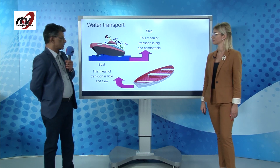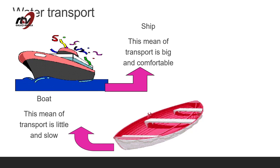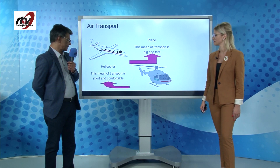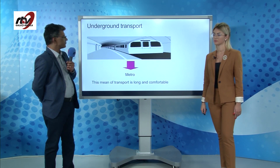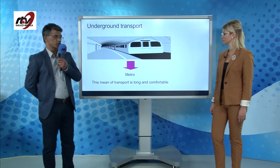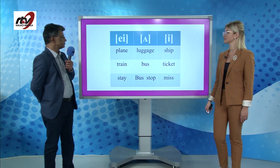Moving on to water transport: the ship is big and comfortable, and the boat is little and slow. For air transport, the plane is big and fast, and the helicopter is short and comfortable. For underground transport, the metro is long and comfortable.